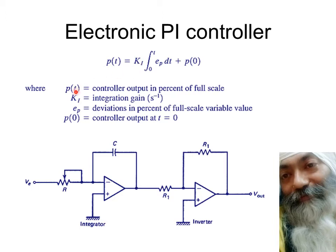This is the general equation. PT stands for the controller output in percentage of full scale. KI is the integration gain with units of inverse seconds. EP is the deviation or error in percentage of full scale, and P0 is the controller output which was there at time t equals 0.